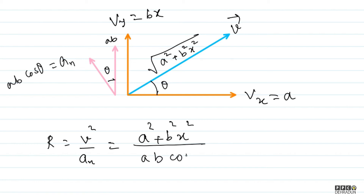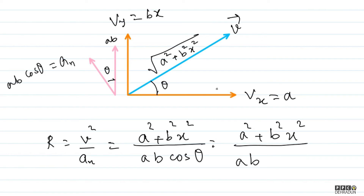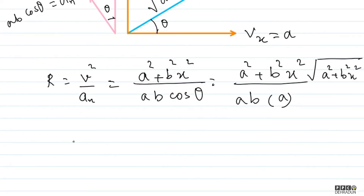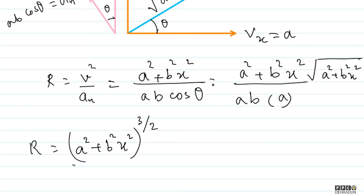We need cos θ, which is not directly given, so we derive it from the diagram. Cos θ equals base over hypotenuse. The base (magnitude along x) is a, and the hypotenuse is √(a² + b²x²). Finally, the radius of curvature is (a² + b²x²)^(3/2) divided by (a²/b) — wait, (a² + b²x²)^(3/2) divided by ab, giving us the radius of curvature as a function of x.